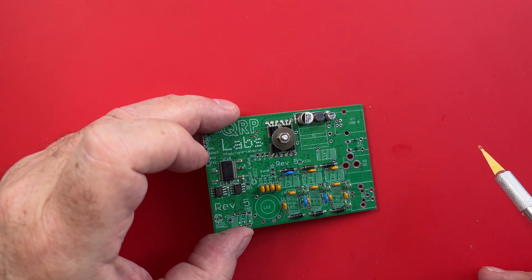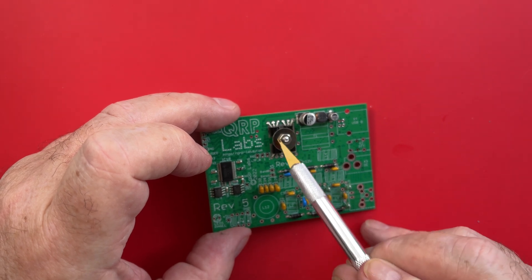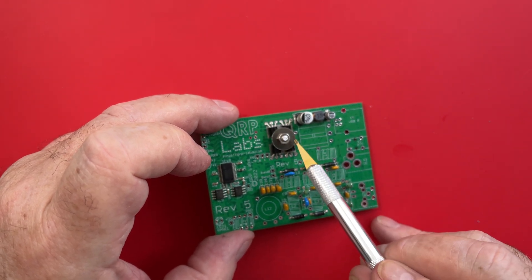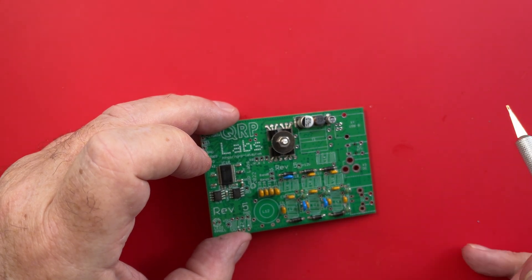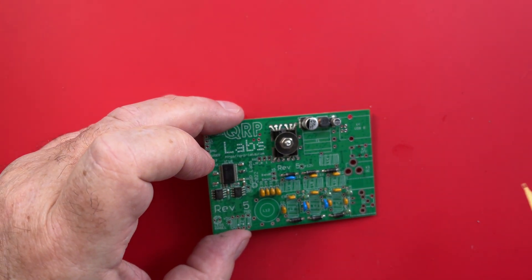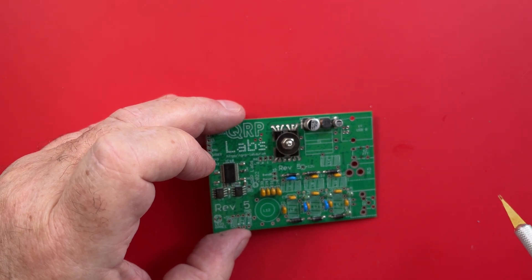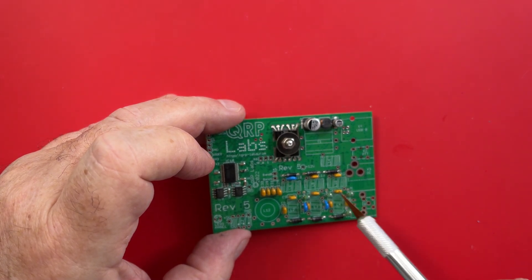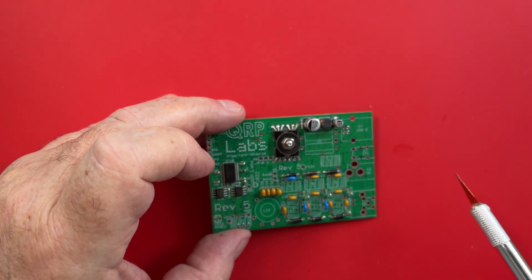So they're all done, and there are four PA transistors here held and heat-sinked by this washer. That's where I am so far, and the next step is to start winding toroids. There are quite a few of them as you can see here, including this binocular toroid.